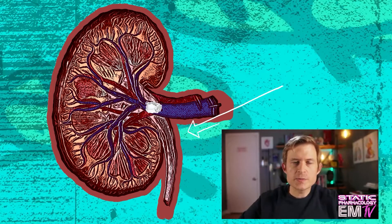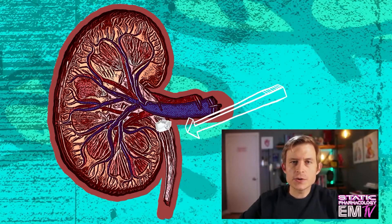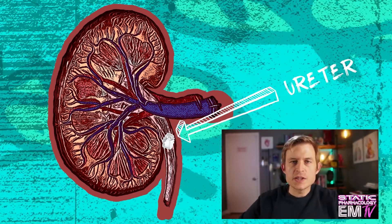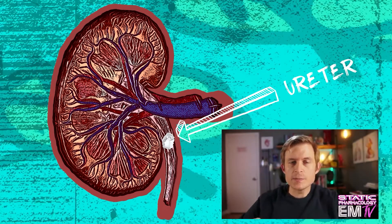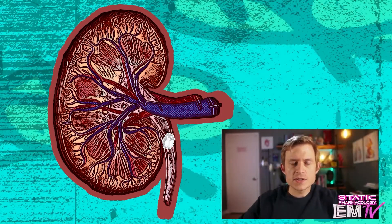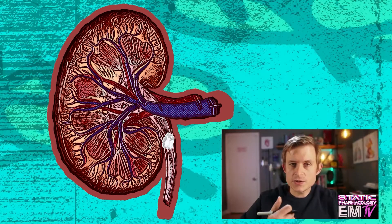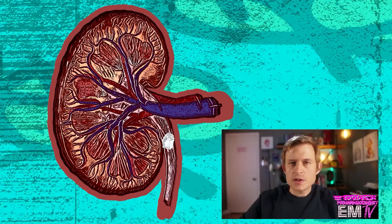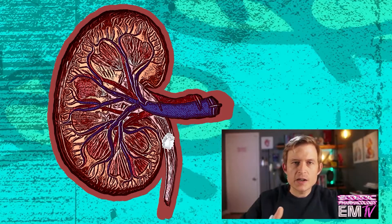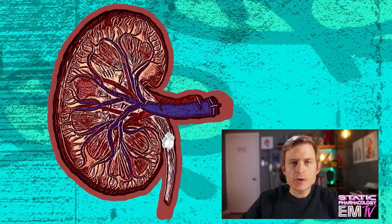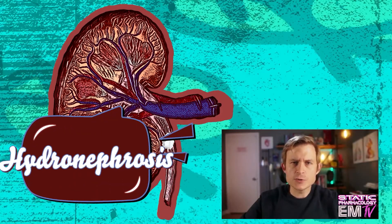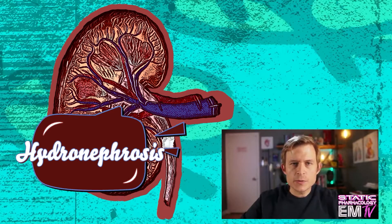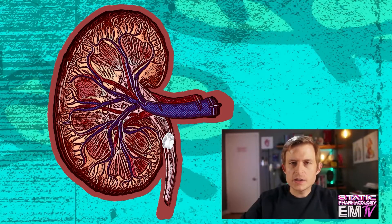However, when the stone begins to migrate into the ureters — the tubes that convey urine into the bladder — this is where we start to get pain. As peristalsis continues, it clamps down on that stone, eliciting pain. If the stone becomes lodged in the ureter, urine can then back up into the renal pelvis, causing a condition known as hydronephrosis. The wave-like frequency of the pain can also be explained by that peristaltic motion.